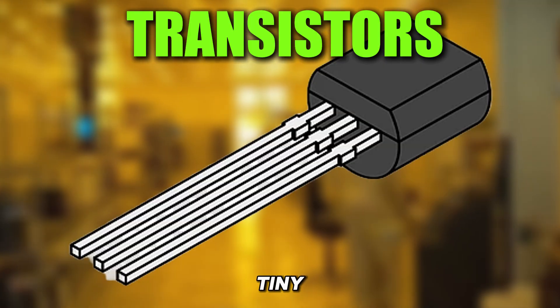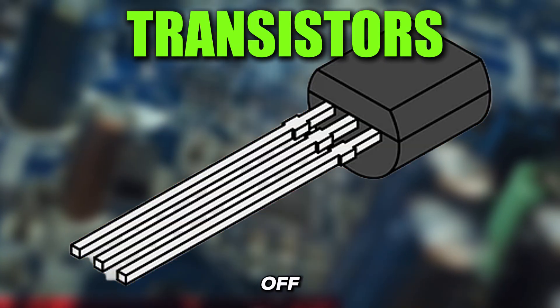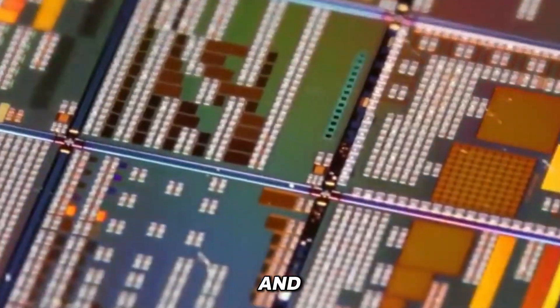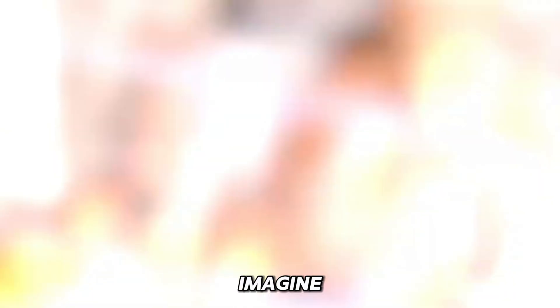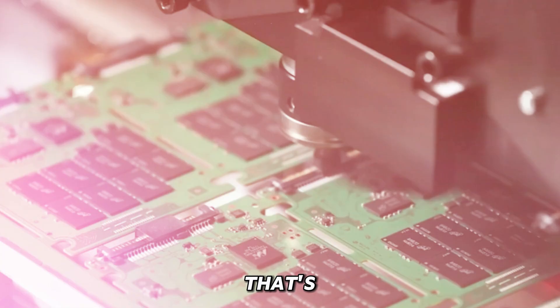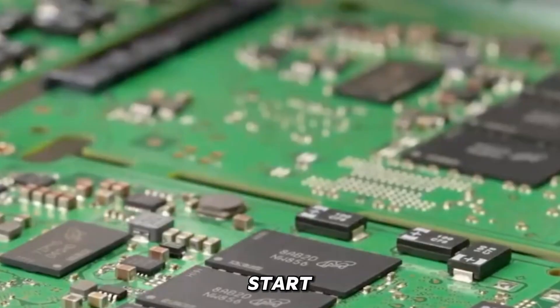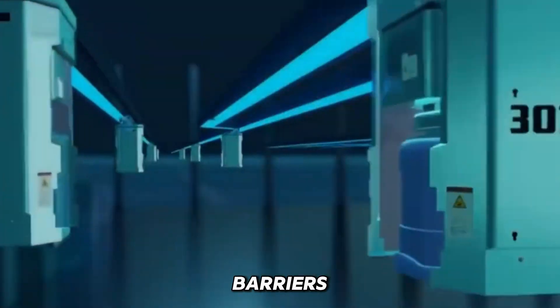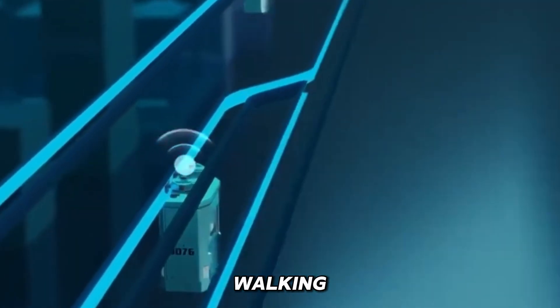Transistors, those tiny switches that flip signals on and off, become so small they begin acting like quantum systems, and that changes everything. Imagine trying to shut a door, yet the wind still blows straight through. That's what happens with electrons. They start tunneling through a process called quantum tunneling, slipping through barriers that should be solid. Like walking through a wall.